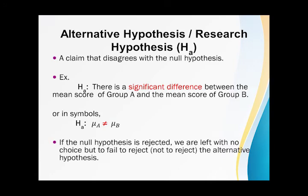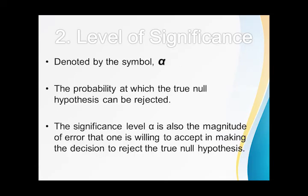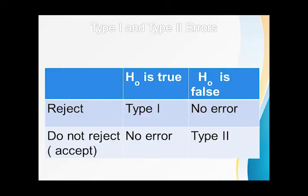The level of significance, we denote this by alpha and is interpreted as the probability that a true null hypothesis will be rejected. It is also the magnitude of error that one is willing to accept in making a decision to reject the null hypothesis. That's why in medical research and other crucial tests, we use alpha equals 0.01 or lower.